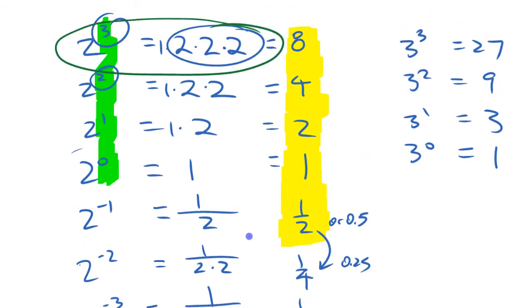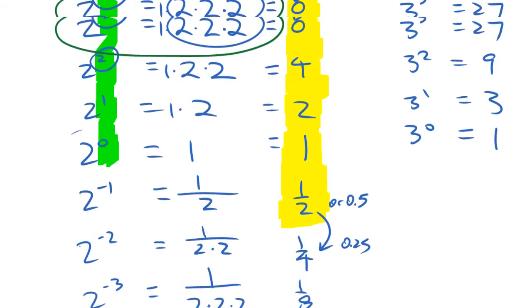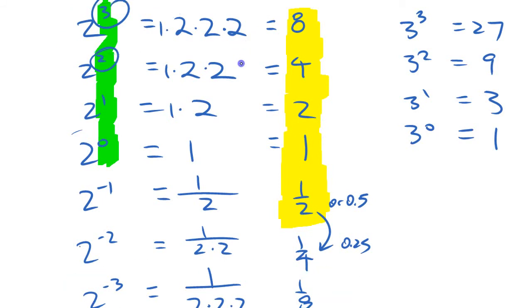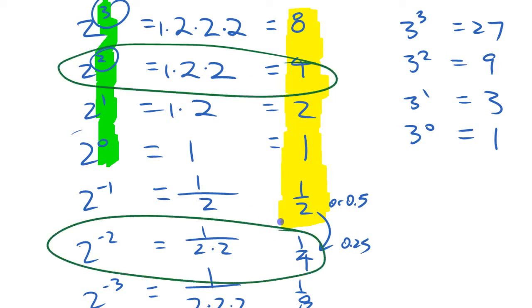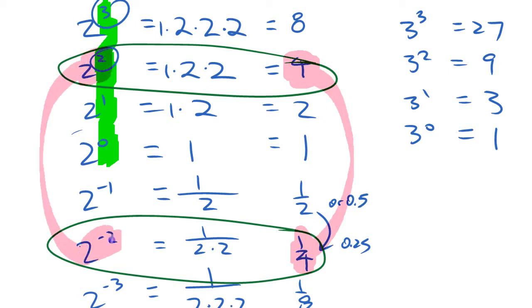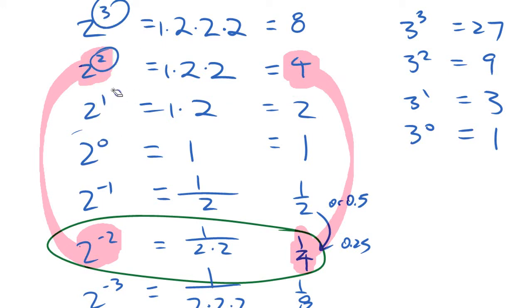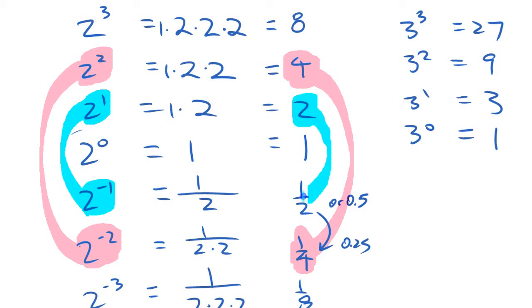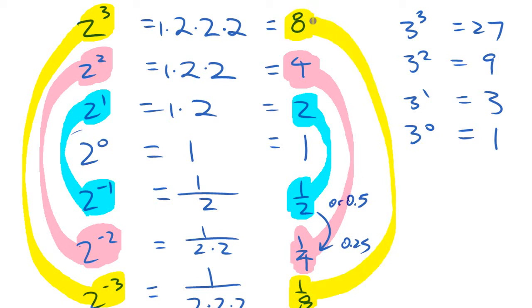There's a parallel: 2 to the negative 3 is related to 2 to the positive 3, and 2 to the negative 2 is related to 2 to the positive 2. If you look at those two numbers — 4 and a quarter — they're matched up: 2 to the 2 and 2 to the negative 2 are reciprocals of each other. Similarly, 2 to the 1 and 2 to the negative 1 — that's 2 and one half — are reciprocals. And 2 to the 3 and 2 to the negative 3 — 8 and one eighth — are also related to each other.